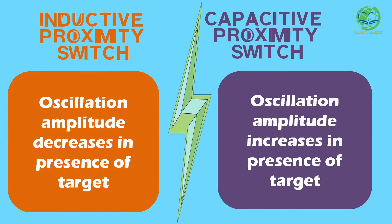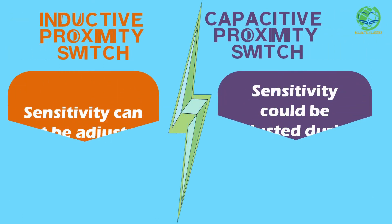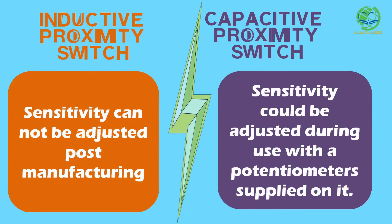In case of inductive sensors, the oscillation amplitude decreases with the presence of the target object, while in case of capacitive sensors, the oscillation amplitude increases with the presence of the target object. Inductive sensors' sensitivity cannot be adjusted, while capacitive sensors are supplied with a potentiometer to adjust the sensitivity and sensing distance.